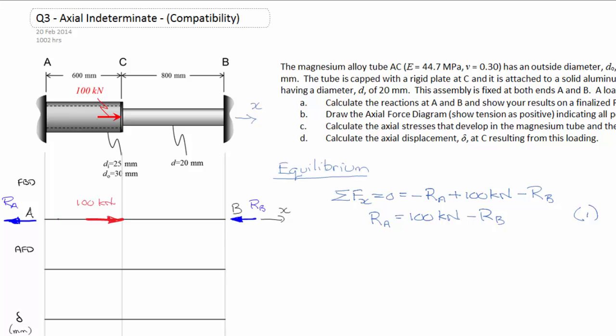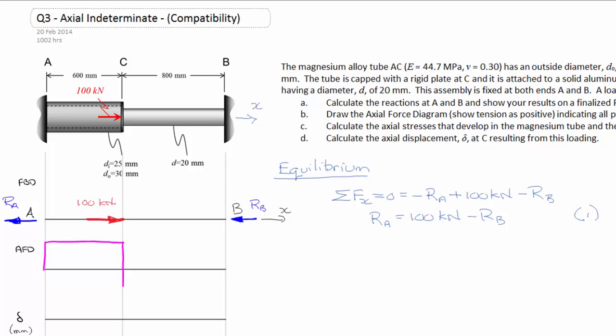If we look at our free body diagram again at A, we have a force to the left which is going to put that section AC into tension. Tension to us is normally positive, so I'll draw it up. We know it's going to be uniform between A and C, at which time it's going to change. It's going to go down 100 kilonewtons, then continue to the right at a constant load.